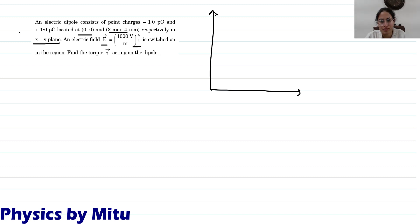Let's make the Cartesian system. At origin minus 1 picocoulomb charge is placed and at (3,4) coordinate plus 1 picocoulomb charge is placed. Electric field direction is x-axis. We find torque.